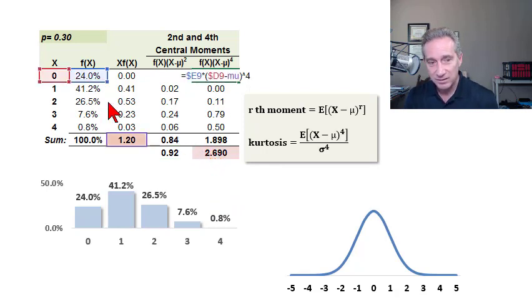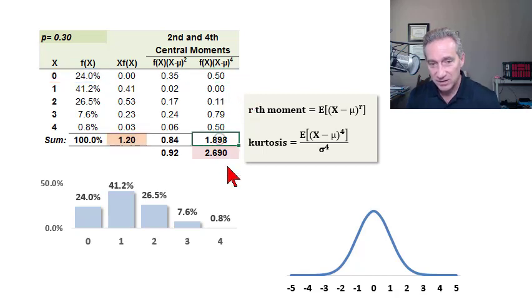Same pattern, it's F of X multiplied by the difference between X and the mean, but we're taking that difference and raising it to the fourth power. So here's the pattern, but r equals 4 for the fourth central moment. Then the sum of those is the fourth moment. And the fourth moment, then, for this binomial is just shy of 1.9. However, as I think I mentioned before, the kurtosis needs to be standardized.